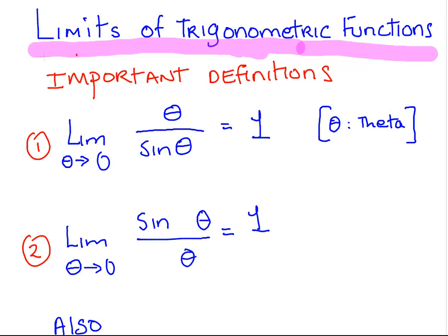The limit as theta approaches 0 — just keep an eye out for this. The limit of theta over sine theta, as theta approaches 0, is 1. The second one is the limit of sine theta over theta is also 1, as theta approaches 0.